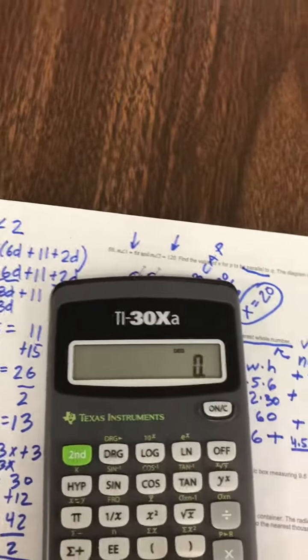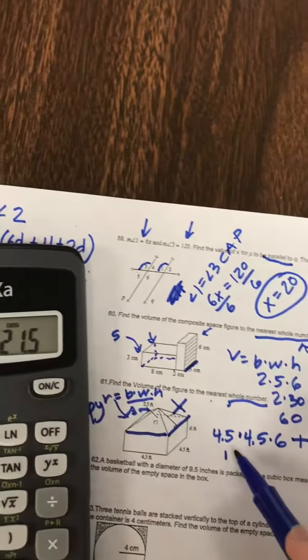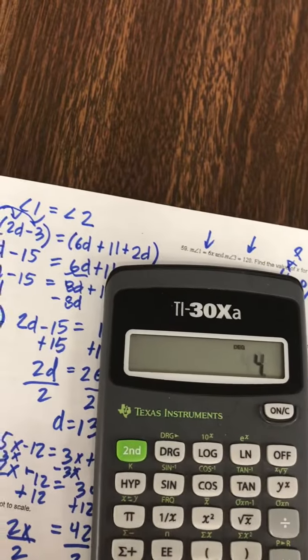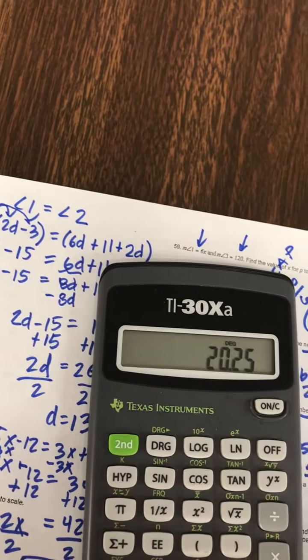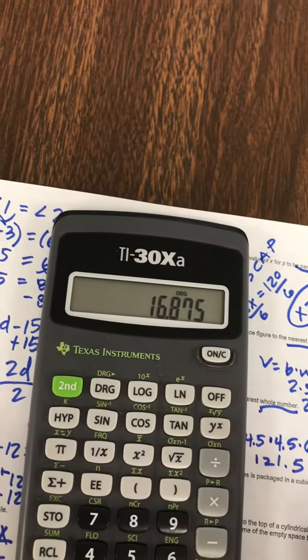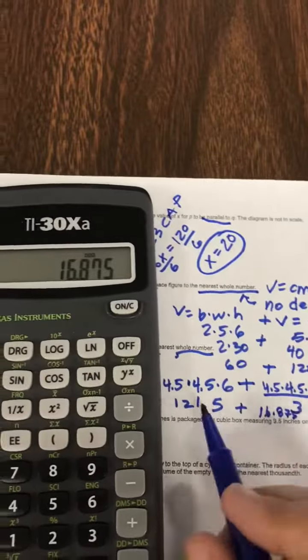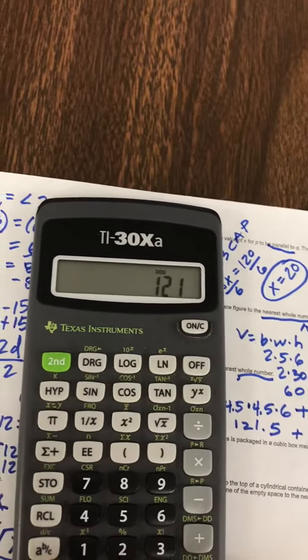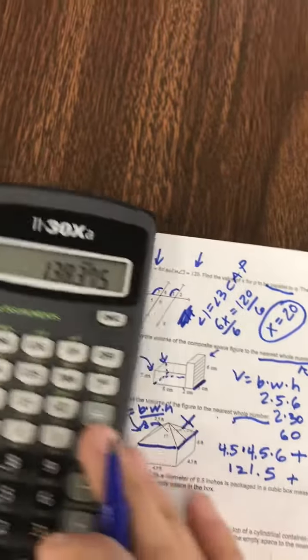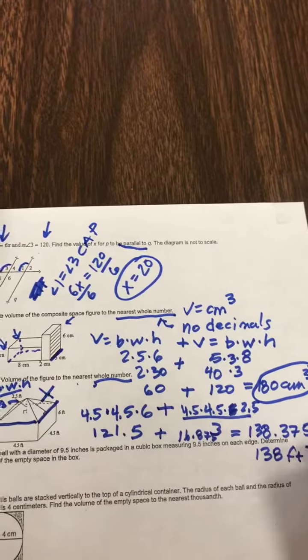So let's put all this in a calculator. 4 and a half times 4 and a half times 6, 121.5. And this one, 4 and a half times 4 and a half times 2 and a half divide by 3. So I get 16.875. When I add these two together, I get 138.375. So if I round this to the nearest whole number I simply get 138 feet cubed.